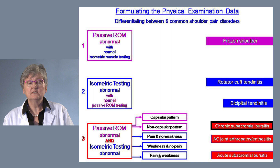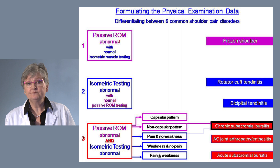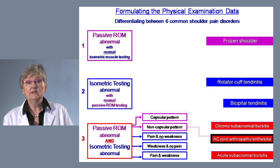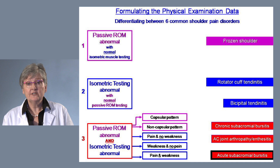For chronic subacromial bursitis, the passive range of motion will show a non-capsular restriction of motion, and isometric testing will reveal pain but no weakness. For AC joint arthropathy or enthesitis, this will also be a non-capsular restriction of motion, with pain and no weakness on isometric muscle testing.